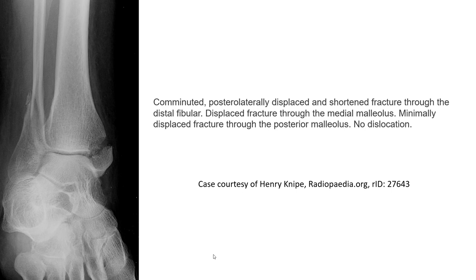This is the first example of trimalleolar fractures, which shows a comminuted, posteriorly and laterally displaced, shortened fracture through the distal fibula, a displaced fracture through the medial malleolus, and a minimally displaced fracture through the posterior malleolus with no dislocation. So we can see all three components of the malleolar fractures — this is called a trimalleolar fracture.